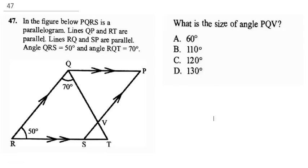Question 47 says in the figure below PQRS is a parallelogram. Lines QP and RT are parallel, lines RQ and SP are parallel. Angle QRS is 50 degrees and angle RQT is 70 degrees. What is the size of angle PQV? This is what we are looking for.